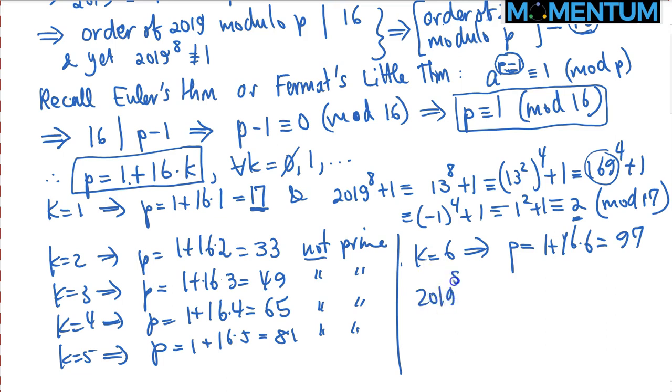So 2019 raised to the 8th power plus 1 modulo 97. If you divide 2019 by 97, I think the remainder comes out as 79 raised to the 8th power plus 1. But 79 is simply minus 18 to the 8th power plus 1. I can split this into two parts: minus 18 squared, which is 324 raised to the 4th power, plus 1.